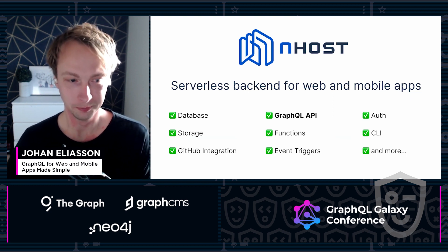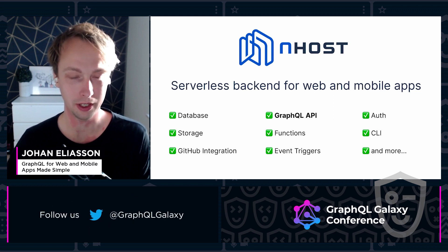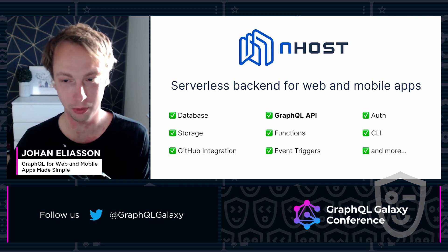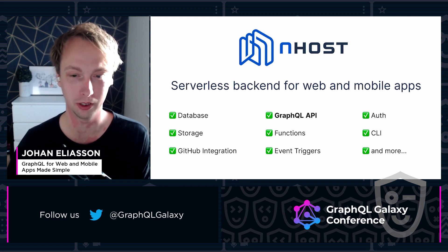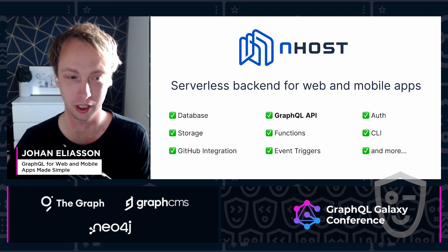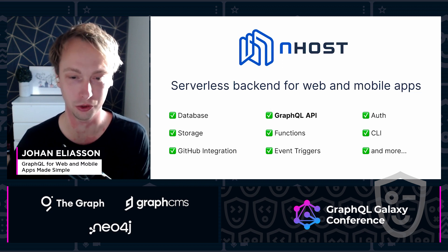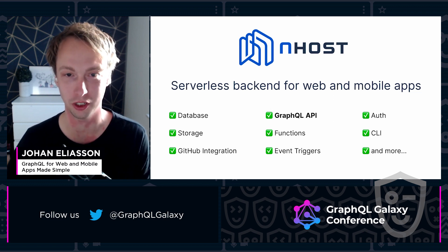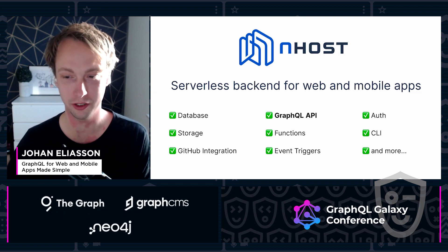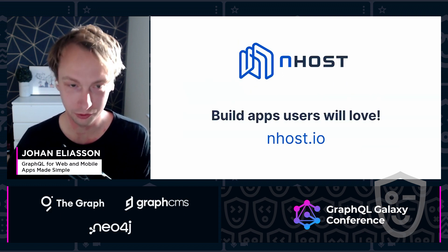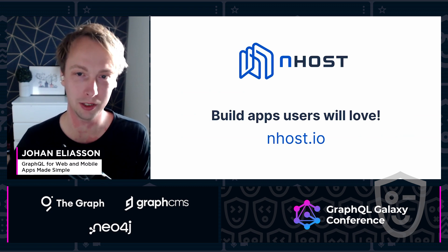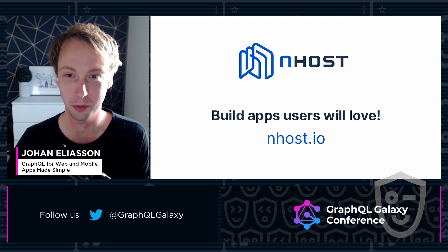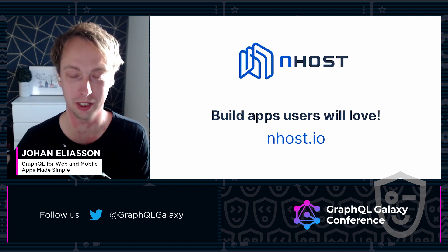We're a serverless backend, and here are some of the things that we provide. The top layer — database, GraphQL API, and authentication — is the most important part of what we provide, but we also have you covered in various other parts of the backend: storage, functions, a CLI for local development, GitHub integration so you can push your code to GitHub and we will automatically deploy migrations, metadata, and functions for you, event triggers, and much more. So now there's really no excuse anymore — GraphQL can be simple and available for everybody. I encourage everybody here to build apps that are both fun to develop and that users will love.